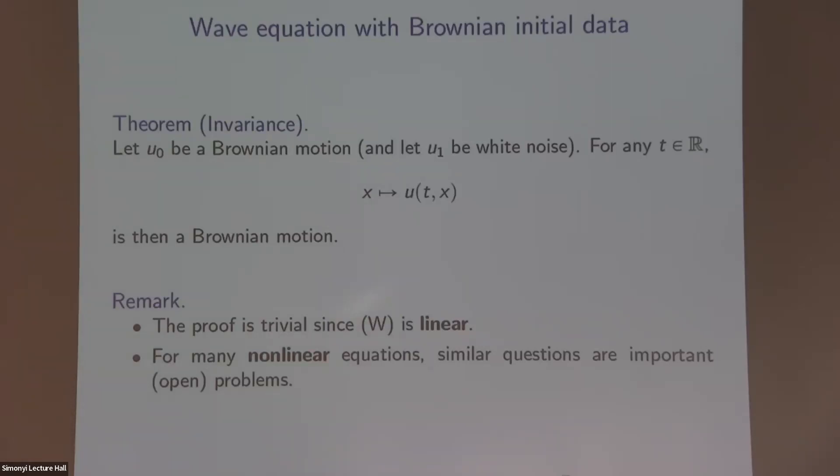So let u0 be a Brownian motion. To be honest, it's a periodic Brownian motion, just to address kind of this question, and let u1 be white noise, which I don't really want to define. So you need to worry about the initial velocity as well. But if you have this, then you can look at the solution of this wave equation. And for every time t, this will again be a Brownian motion. And in fact, the time derivative will also be white noise. So the law is really invariant in time. It doesn't change. So maybe just to connect this to Shira's very nice talk. The reason why you actually might care about proving this is because then you can use the Poincaré recurrence theorem. So what would be one of the motivations why you might want to prove this?